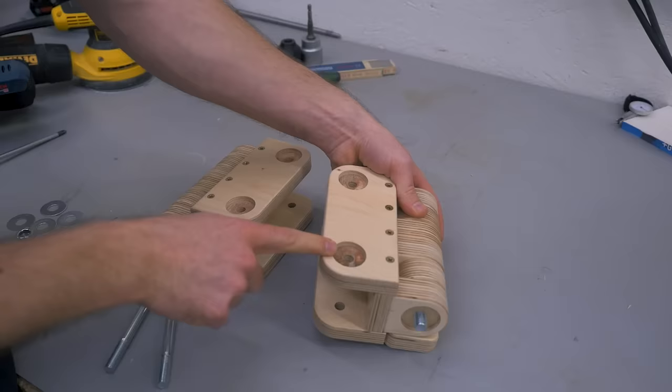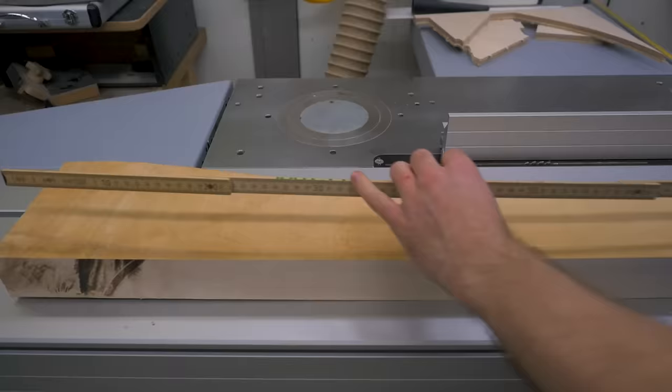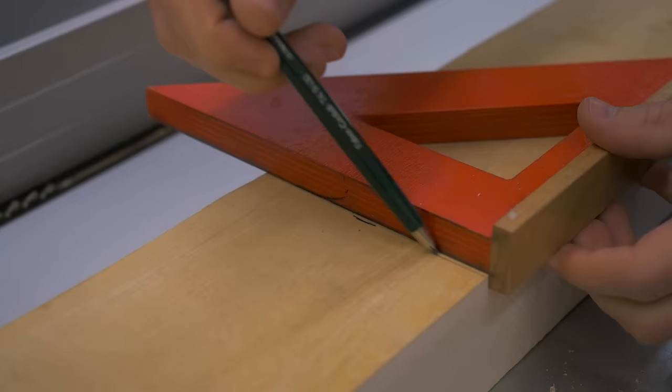As you can see, I screwed up the bolt length on these parts as well. But here I have the pivot points for the parallelogram arms, and let's make the next. A scrap piece of hardwood works perfectly for this.